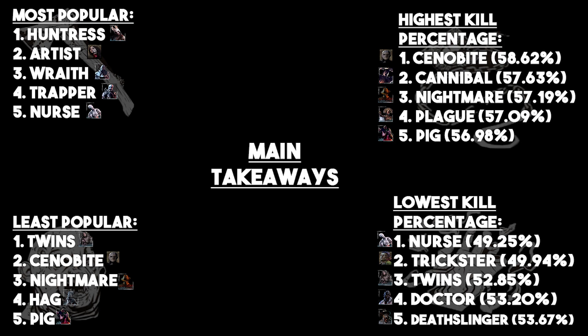The other killers in the least popular list are the Twins, the Cenobite, the Nightmare, the Hag, and the Pig. Importantly, the Twins were overwhelmingly the least popular — they were the only one that couldn't even get two percent of the player base playing them. It's kind of a shame because their ceiling is so high, but a lot of people just don't seem to like them. We do know a rework is coming — Legion and Ghostface are going to be looked at first, and then after that it looks like it'll be the Twins' turn.